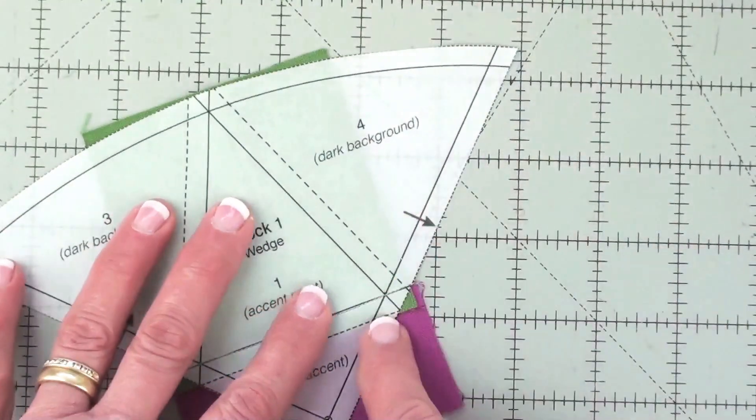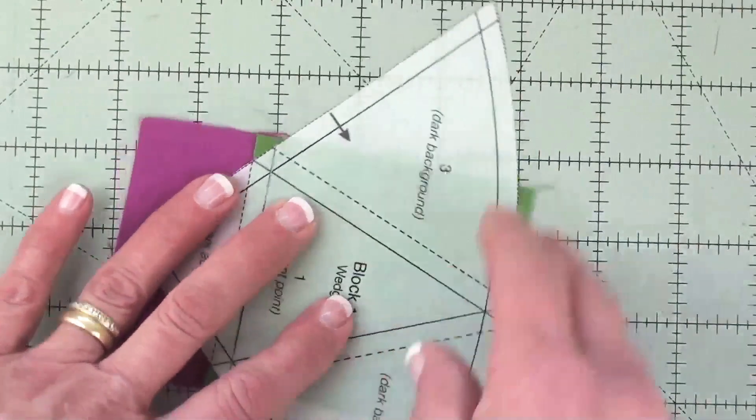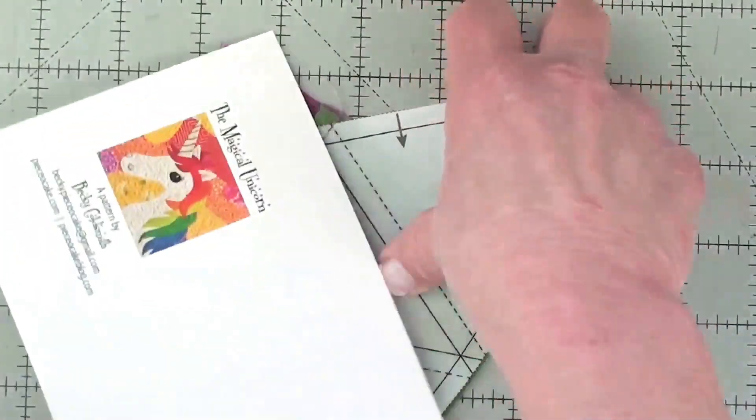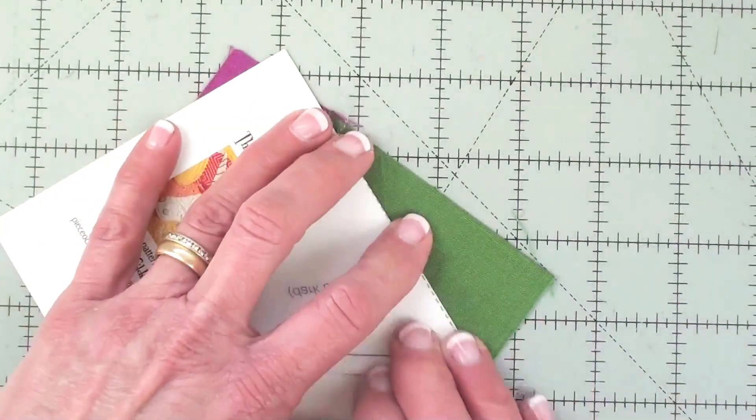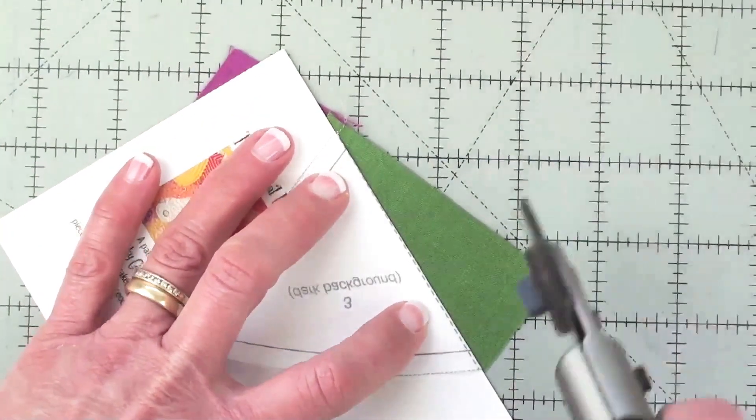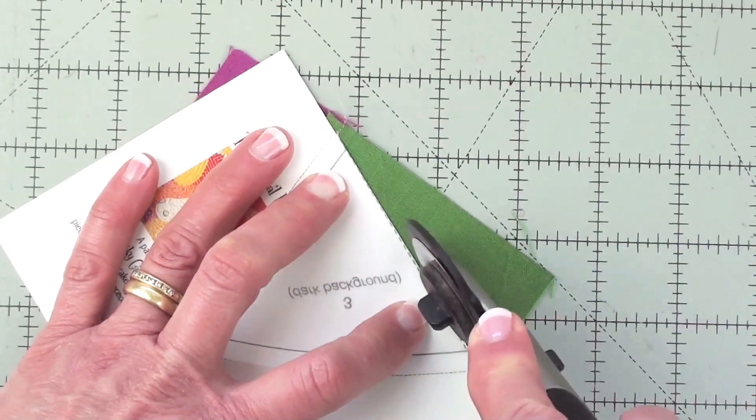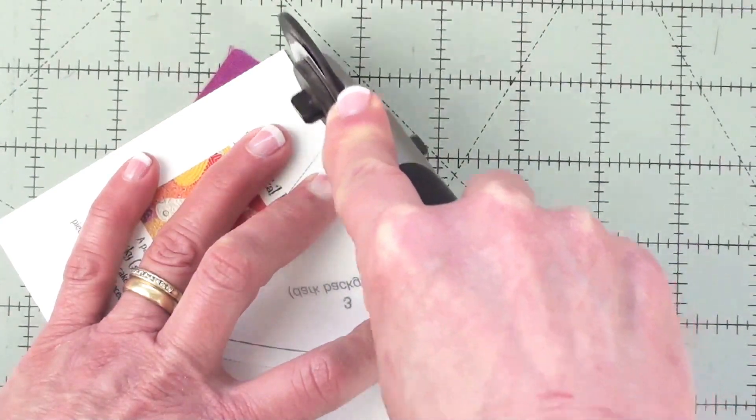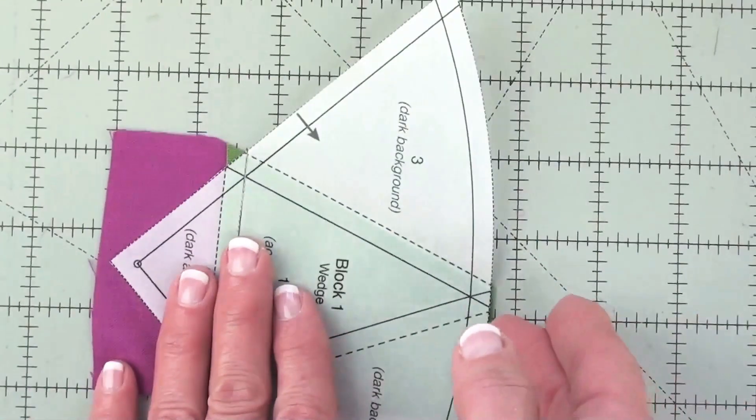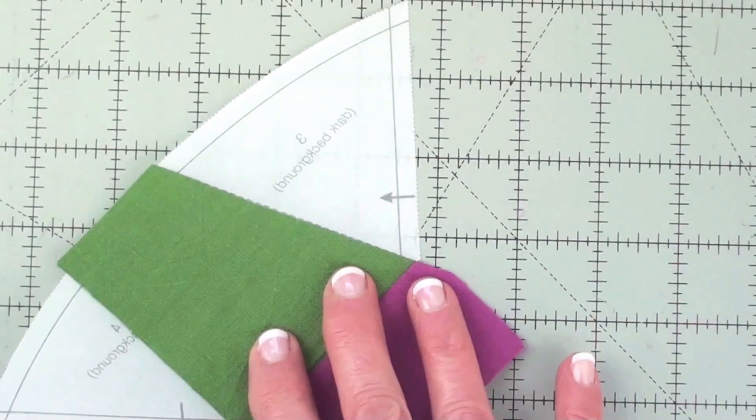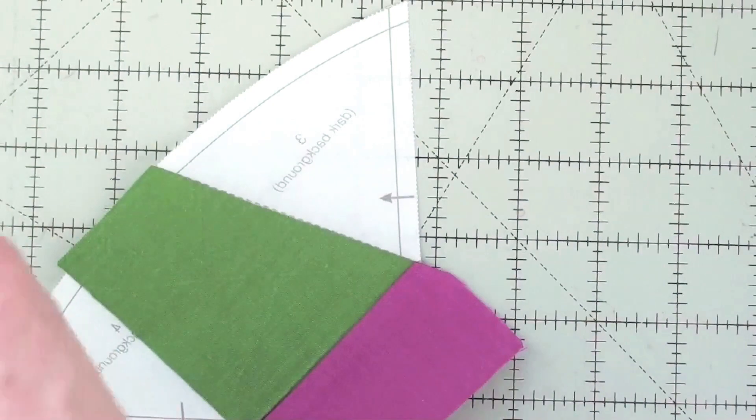The next thing I would do is turn this over and fold it just like this and I would trim away the excess fabric under number three and then I would turn this upside down.